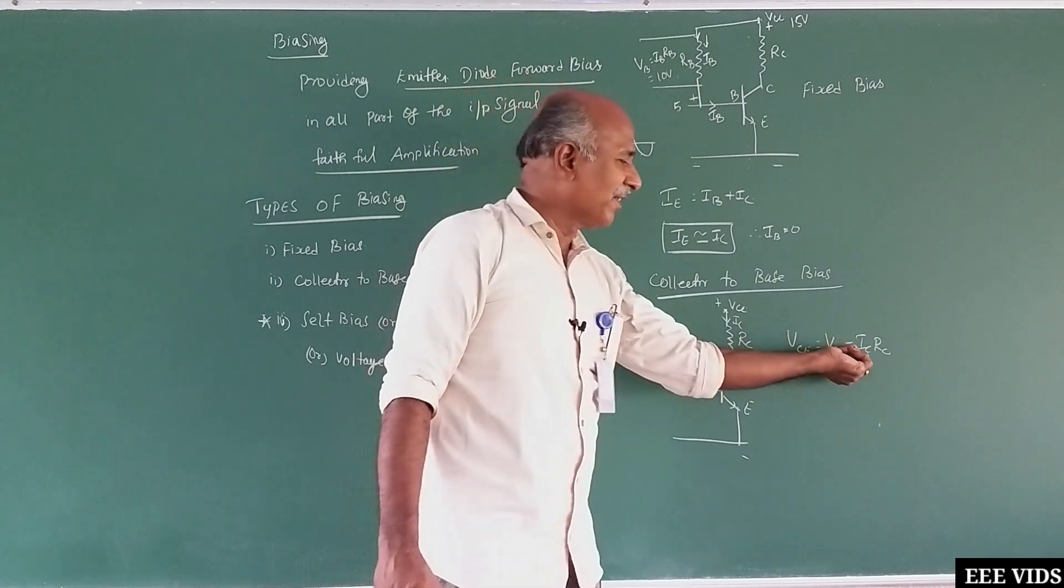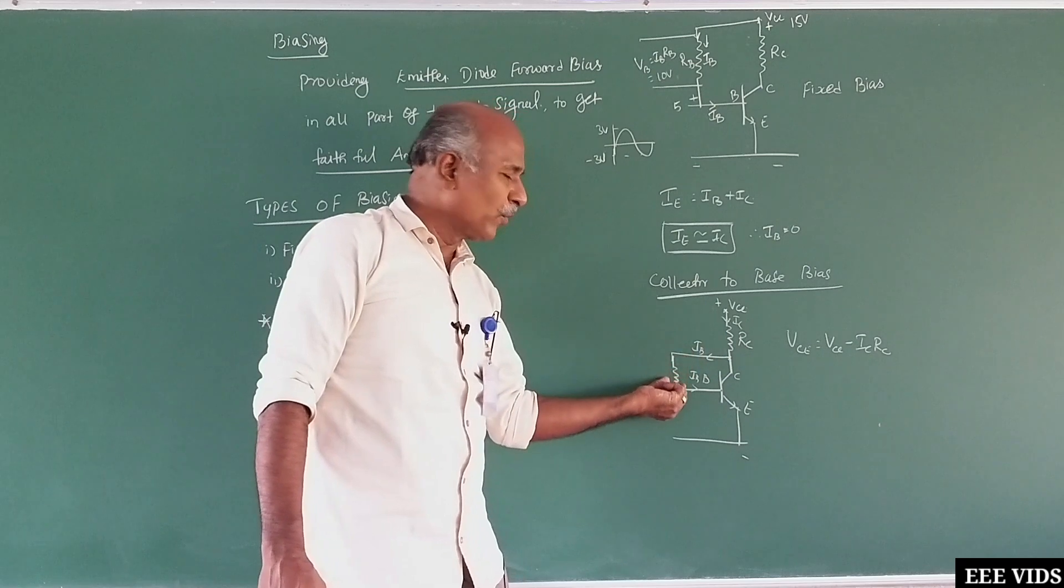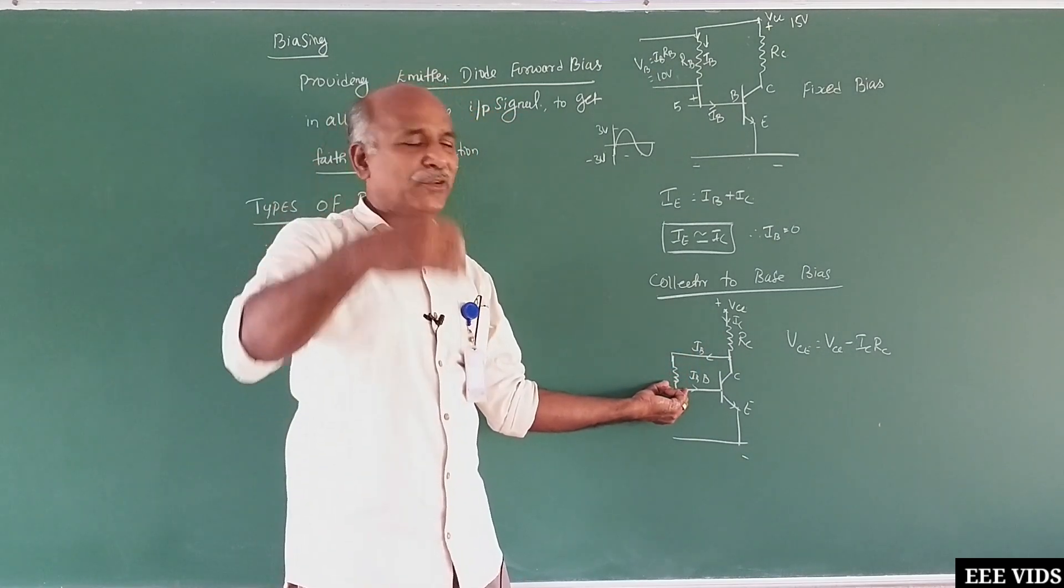When IC increases, this drop increases. This voltage increases, then the voltage here is less. In the voltage, there is more fluctuation, this is fixed.